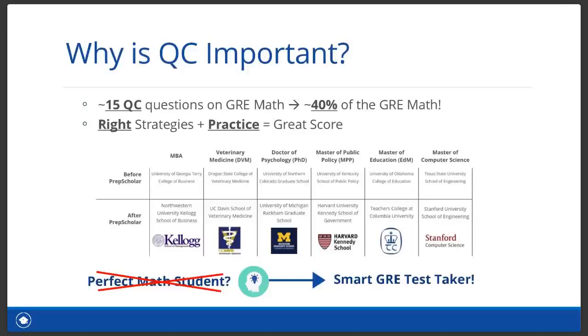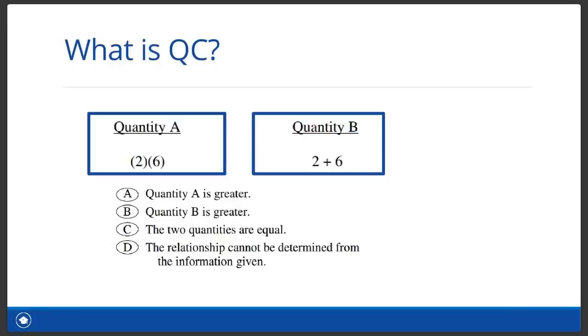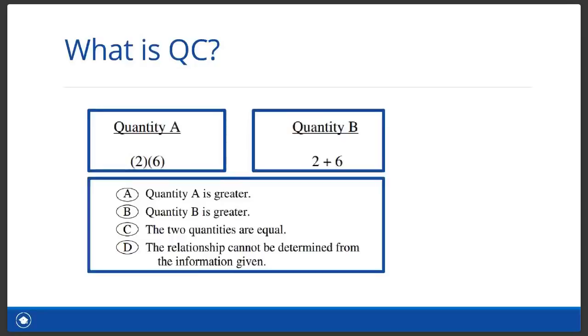Let's start by going over what is quantitative comparison. There are GRE math questions where we compare the values of two quantities. The four possible answer choices for any quantitative comparison question are: A, quantity A is greater; B, quantity B is greater; C, the two quantities are equal; D, the relationship cannot be determined from the information given. Now, let's walk through this easy example to help you understand quantitative comparison.